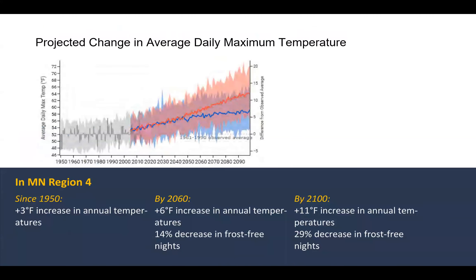For the vulnerability assessment, we look at existing and projected future climate change considerations for the region. This chart shows we are seeing an increase in maximum daily and average daily temperature. Since around 1950 we've seen somewhere around three degrees Fahrenheit of increase. By 2060 we anticipate an increase of about plus six degrees Fahrenheit, and by 2100, if we do not abate climate change, a 14% decrease in frost-free nights.